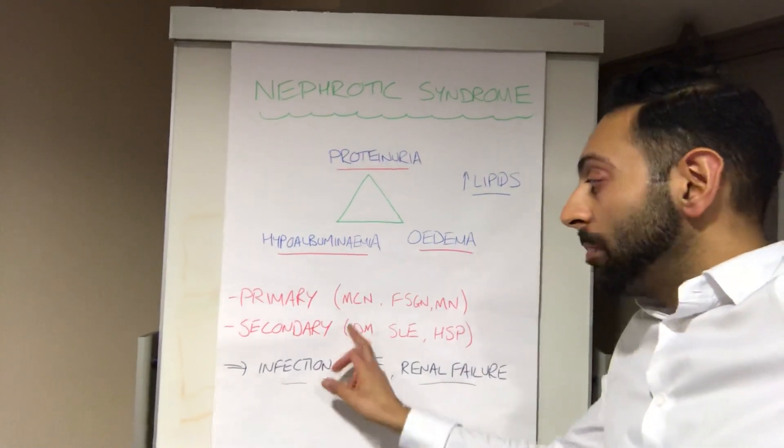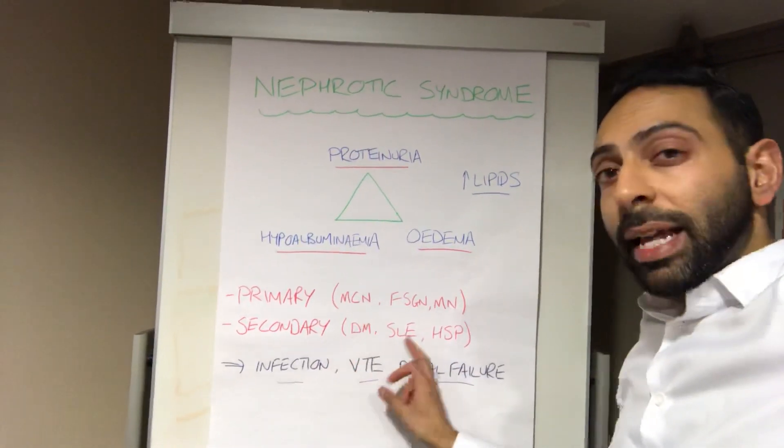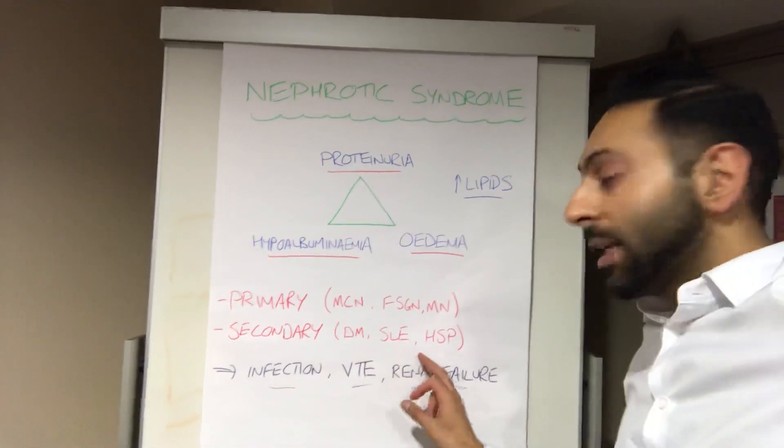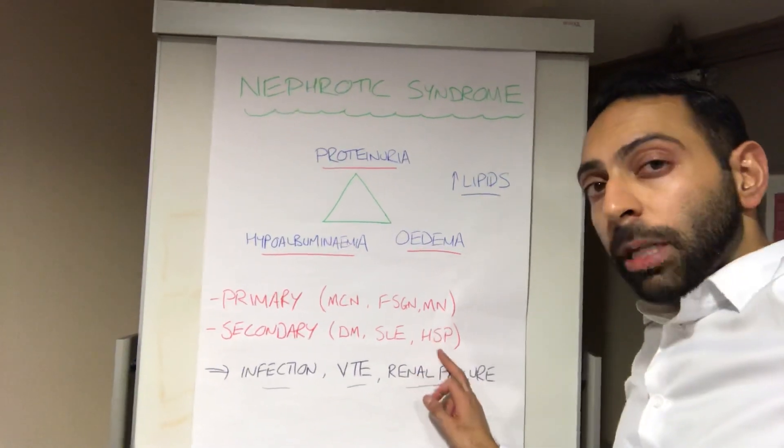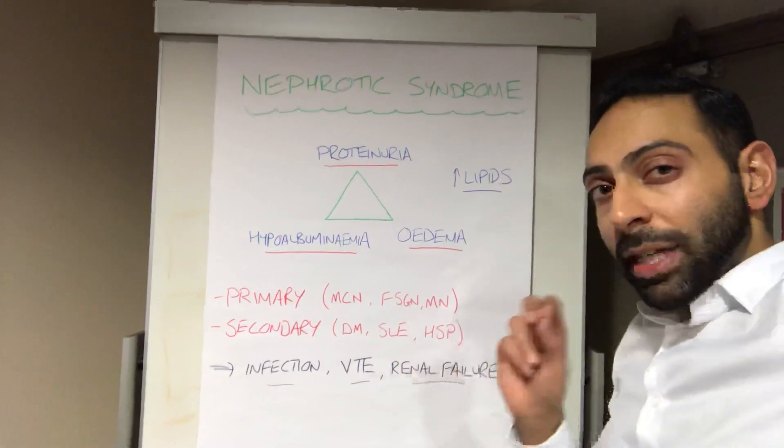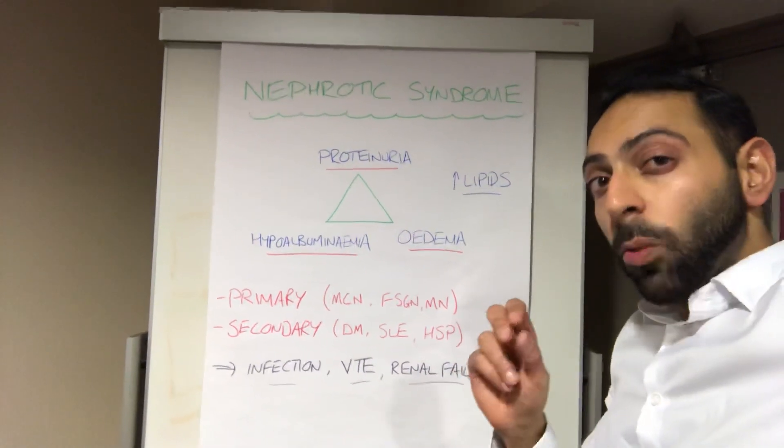Secondary causes include things like diabetes, SLE, and HSP — Henoch-Schönlein Purpura. There are obviously other causes as well.